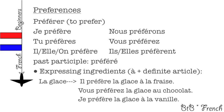We're going to be learning a new verb that describes one's preference. Préférer. Je préfère. Tu préfères. Il, elle, on préfère. Nous préférons. Vous préférez. Ils, elles préfèrent. And the past participle: préféré.